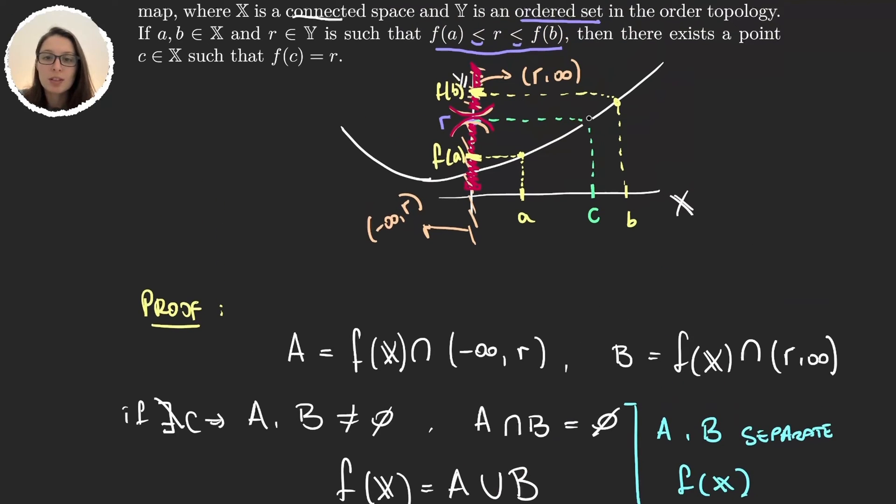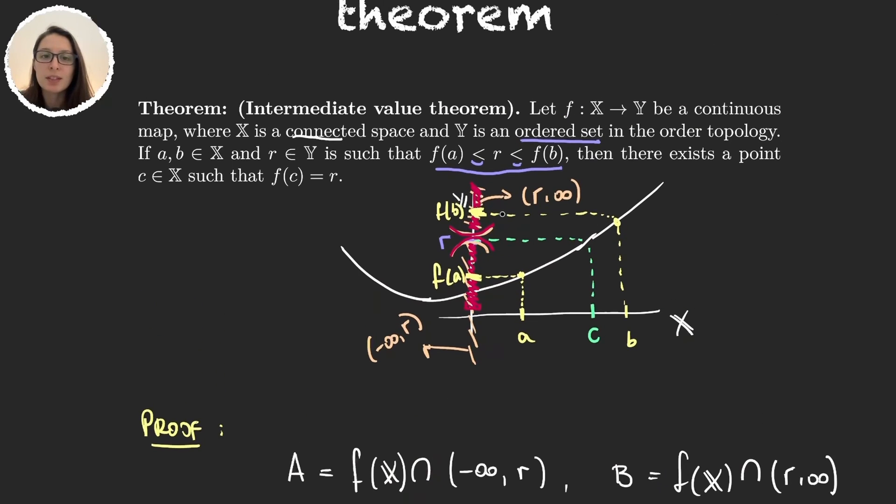You can clearly see the contradiction that f would not be continuous. And like this we have the intermediate value theorem for any topological space. Now this proof might seem way easier than the one we have for the real line, but that is because we have so many hypotheses.